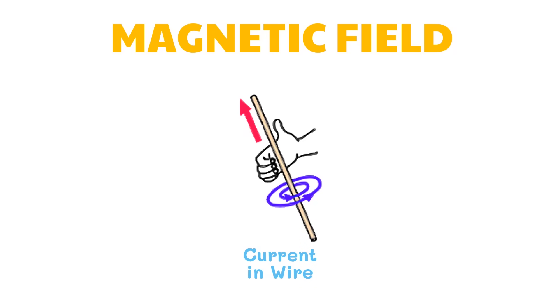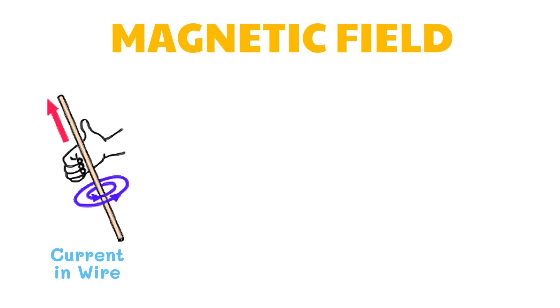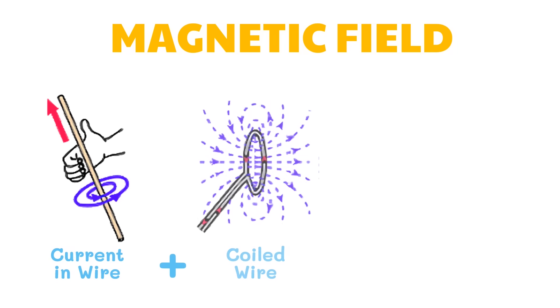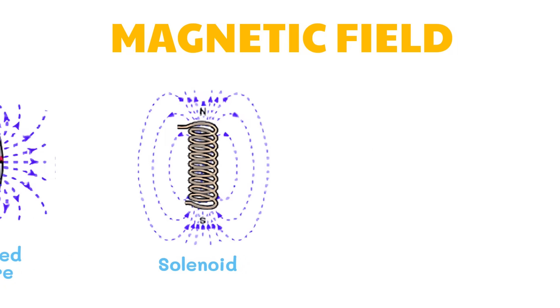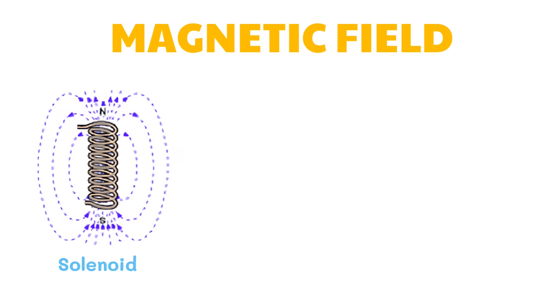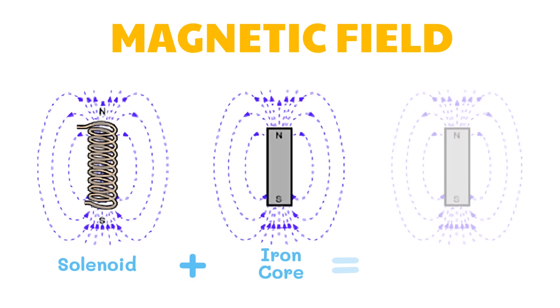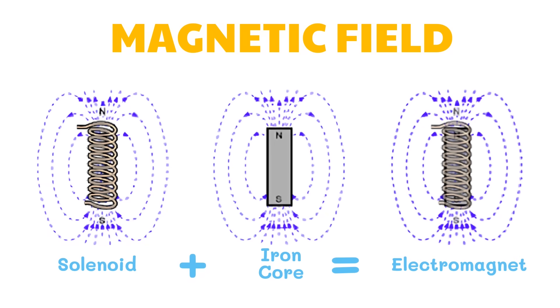As a review, a magnetic field is created around a wire that conducts electric current. When current flows into a coiled wire, known as a solenoid, it acts as a magnet. A solenoid with a core of iron acts as a strong magnet — it is called an electromagnet.